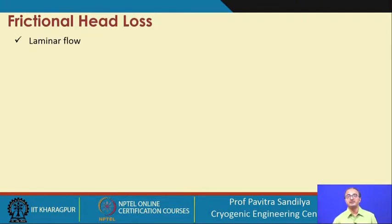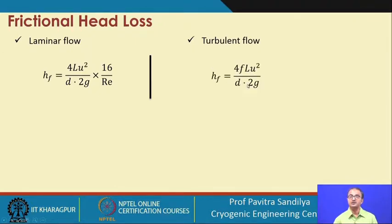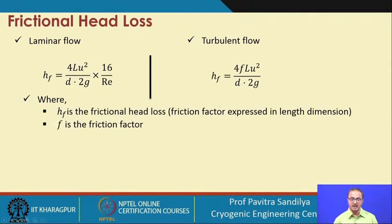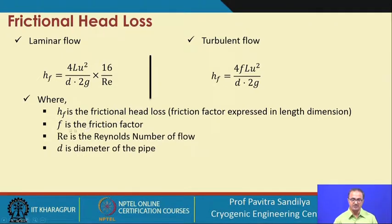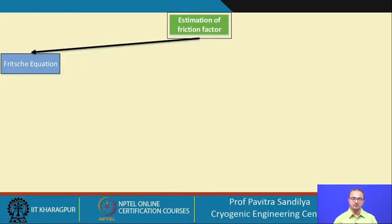Sometimes we express the friction loss in terms of head — that is, in terms of a length dimension. For laminar flow, there is one expression for the frictional head loss, and for turbulent flow, there is another expression. Here h_f is the friction head loss, f is the friction factor, Re is the Reynolds number, D is the pipe diameter, L is the pipe length, u is the fluid velocity, and g is the acceleration due to gravity. These expressions have been obtained through experimental data for laminar and turbulent flow.